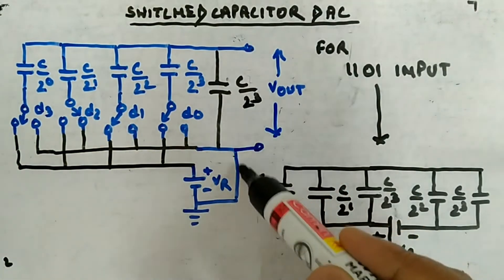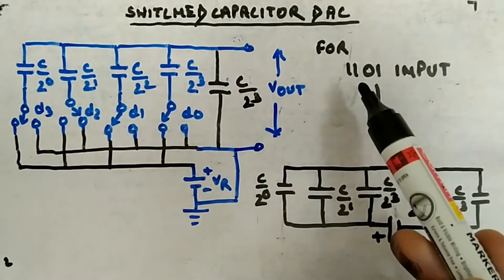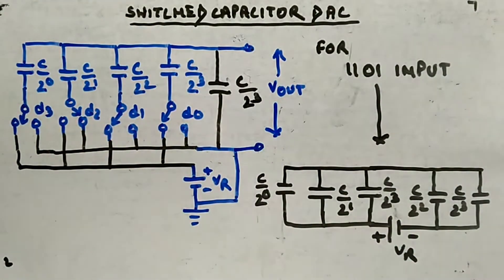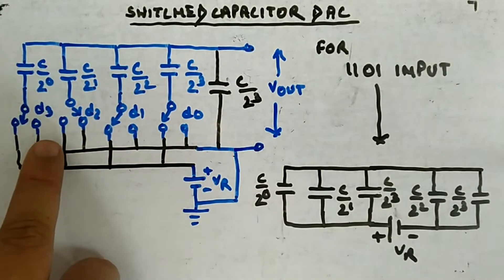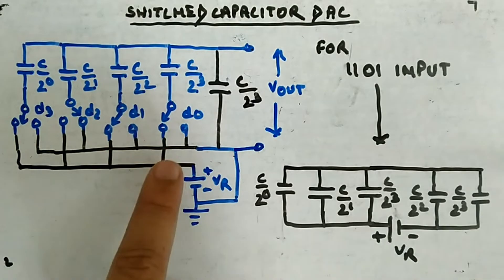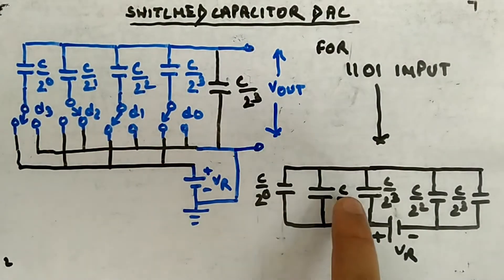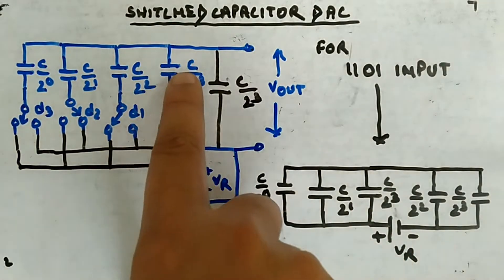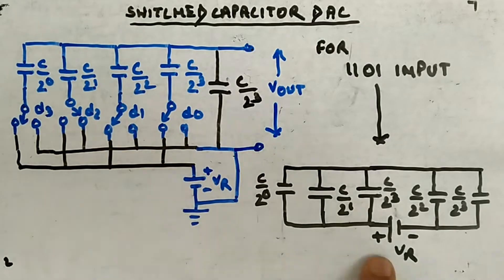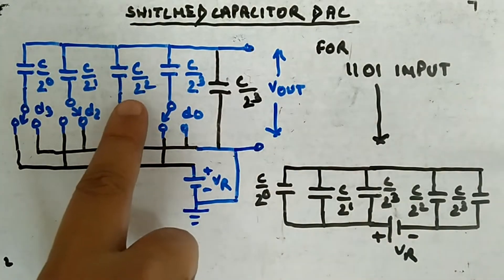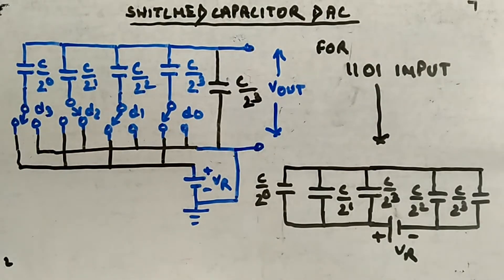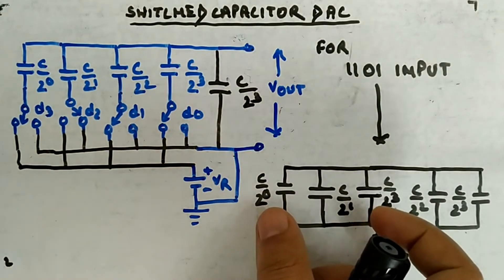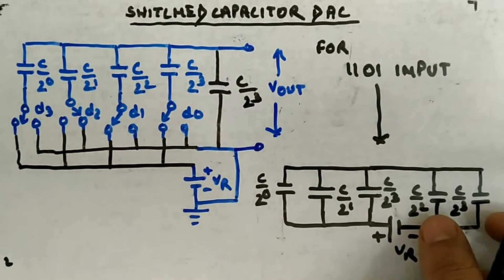Between this point and ground, you are taking Vout. For example, I have taken 1101 as input. If you have this input, the first bit is connected to 1, that is Vr; second bit is connected to 1, that is Vr; and the fourth bit is connected to 1, Vr. So C divided by 2 to the power 0, C divided by 2 to the power 1, and C divided by 2 to the power 3 are connected to the positive terminal of Vr. The remaining ones — C divided by 2 to the power 2 and the extra C divided by 2 to the power 3 — are connected to the negative terminal. You can then take these three capacitors in parallel and these two capacitors in parallel combination.